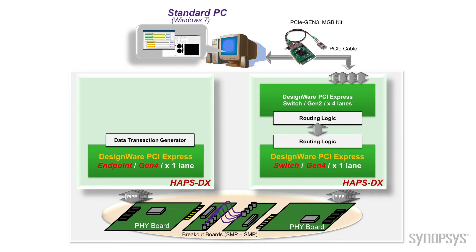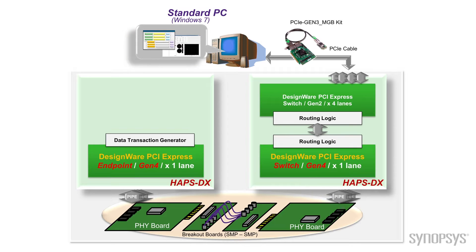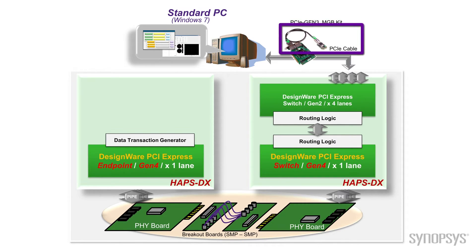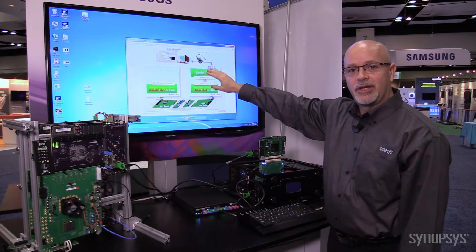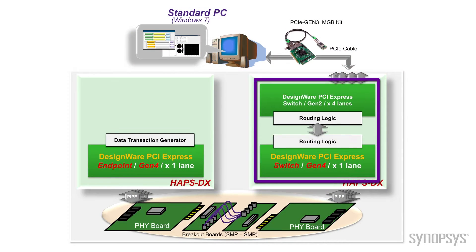We're going to start with a standard PC. Unfortunately today, standard PCs don't support PCI Express Gen 4, so we're going to use an existing system which supports PCI Express Gen 3, and connect it through our HAPS prototyping PCI Express cable. To convert from PCI Express Gen 3 to Gen 4, we're going to use a PCI Express switch — in this case actually using PCI Express Gen 2, which will downshift into the Gen 3 system.